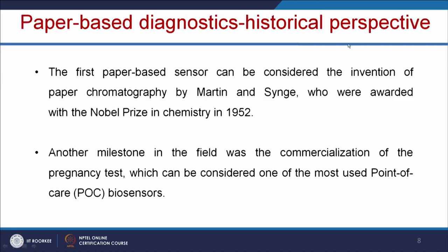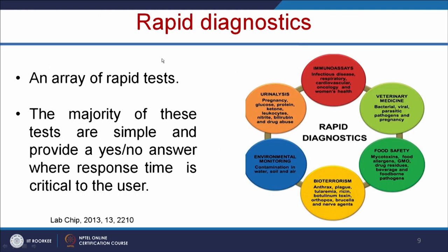From a historical perspective, the first paper-based sensor can be considered the invention of paper chromatography by Martin and Synge, who were awarded the Nobel Prize in 1952. Another milestone in this field was the commercialization of the pregnancy test kit, which can be considered one of the most used point of care diagnostics. These paper-based kits are mainly useful for rapid diagnostics. The majority of these tests are simple and provide a yes or no answer where response time is critical to the user.